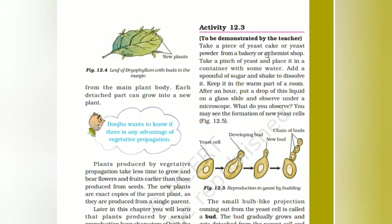Take a piece of yeast cake or yeast powder from a bakery or a chemistry shop. Take a pinch of yeast and place it in a container with some water, add a spoonful of sugar, shake to dissolve, and keep it in a warm part of the room.